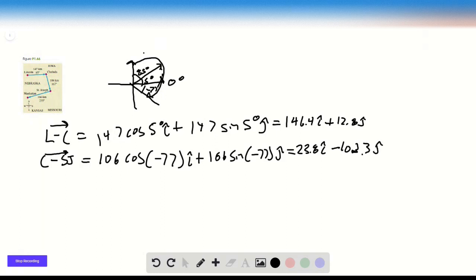And then finally going from St. Joseph's to Manhattan. So 235 degrees, again, we can do the same analysis. So that's 235 from north, which is the same thing as negative 145.